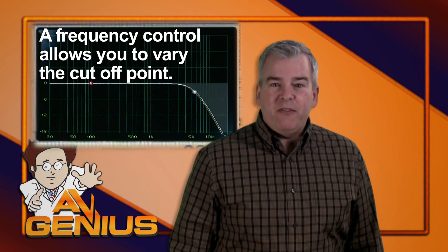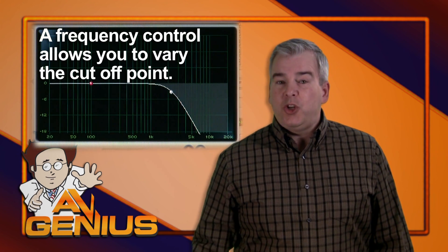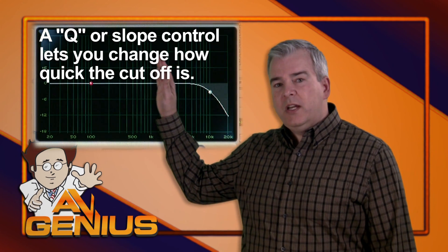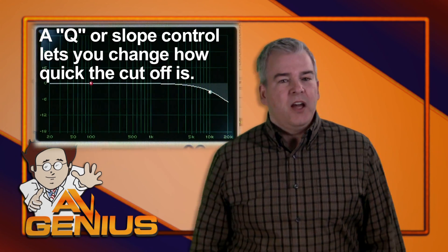Normally, you'd have a frequency control so you could choose the cutoff frequency and possibly a Q or slope control to change how quickly the frequencies are cut off.